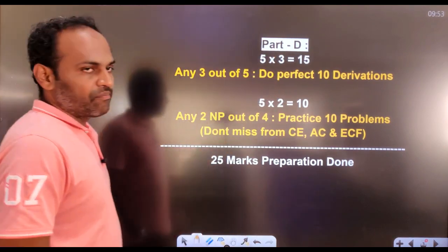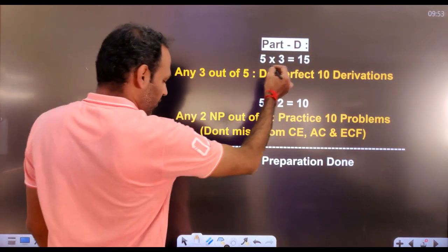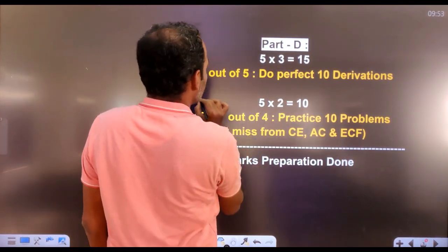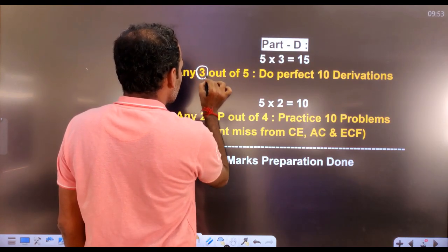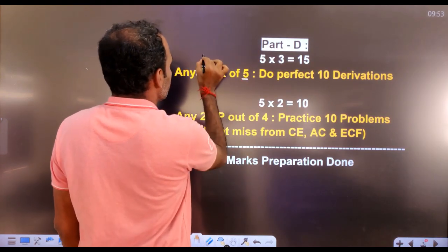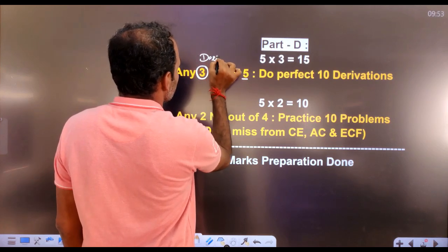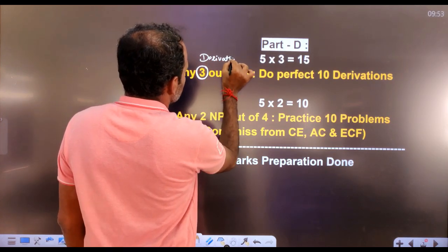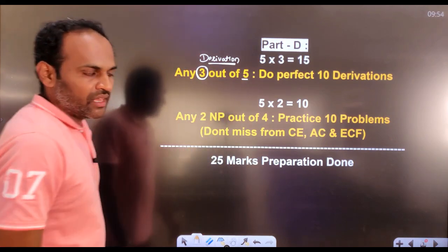First thing is Part D. In Part D, we have 5 marks derivations. We have to answer any 3 out of 5 derivations. So there are 2 extra choices for you.